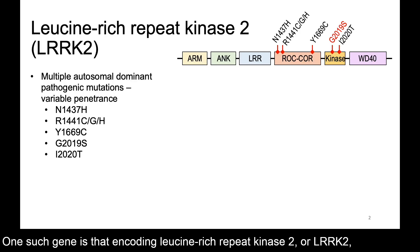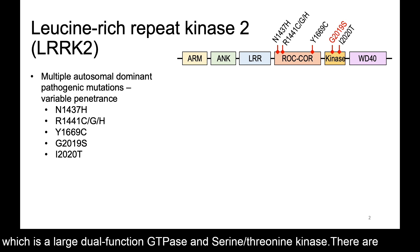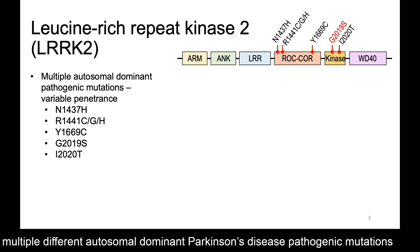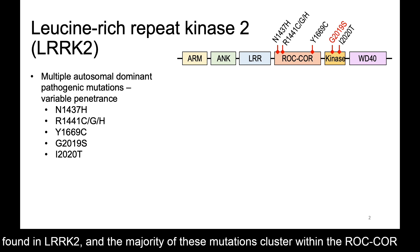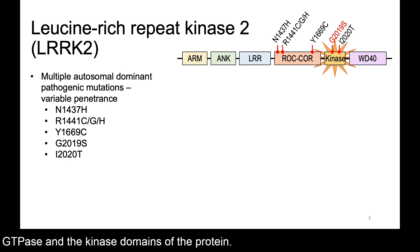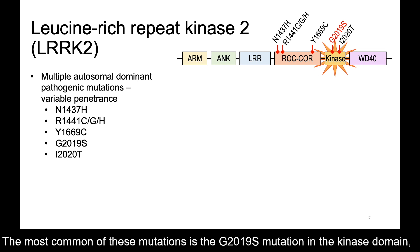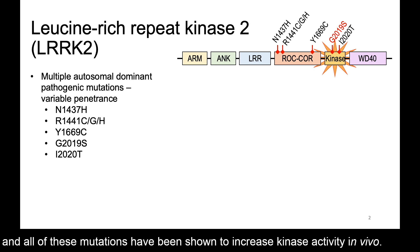One such gene is that encoding leucine-rich repeat kinase 2, or LRRK2, which is a large dual-function GTPase and serine-threonine kinase. There are multiple different autosomal dominant Parkinson's disease pathogenic mutations found in LRRK2, and the majority of these mutations cluster within the ROC core GTPase and the kinase domains of the protein. The most common of these mutations is the G2019S mutation in the kinase domain, and all of these mutations have been shown to increase kinase activity in vivo.